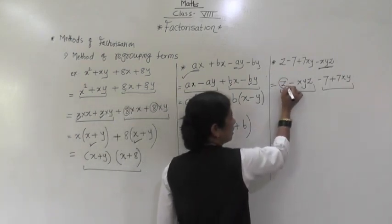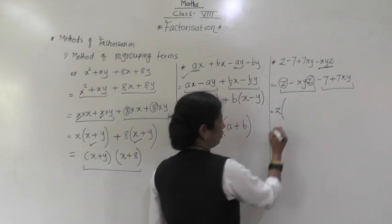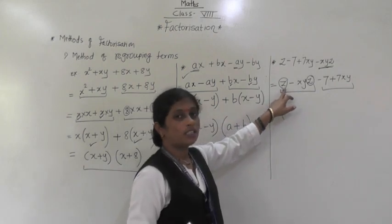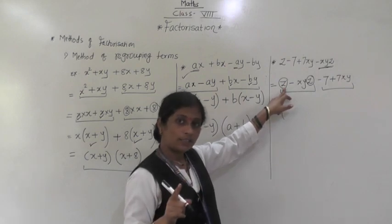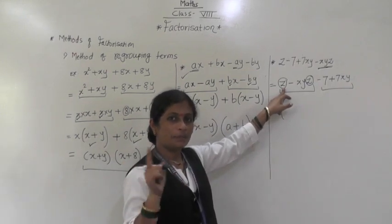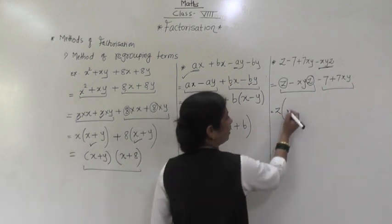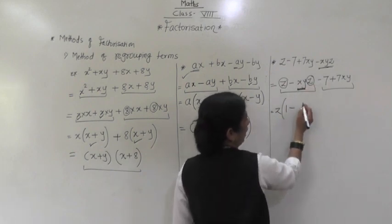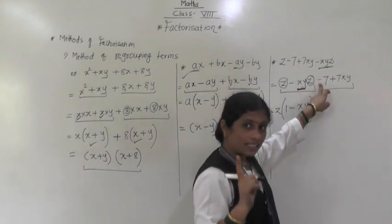First group (z - xyz): z is common, so z(1 - xy) — because when z comes outside, what remains from the first term is 1, and from the second term (xyz ÷ z) = xy. So z(1 - xy). Second group (-7 + 7xy): 7 is common here. The sign is very important — we take -7 outside, so -7(1 - xy).